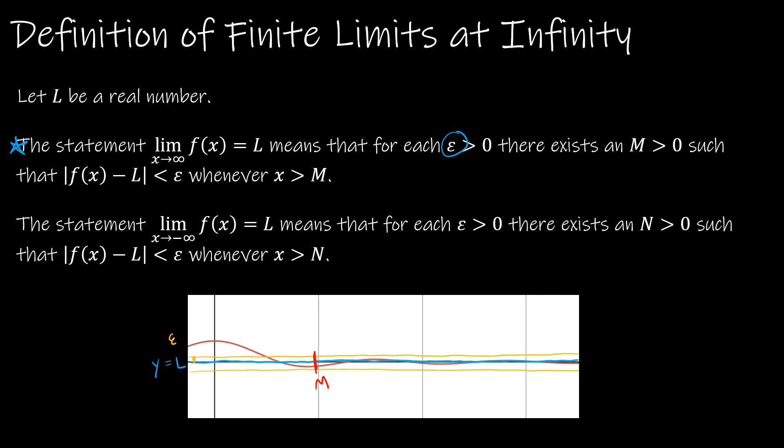So what we're saying is there's some M value. Let's say here's M. There's some M value such that as I move to the right of M, all of my values for my function are going to be within epsilon of the line y equals L. That's really all it's saying.